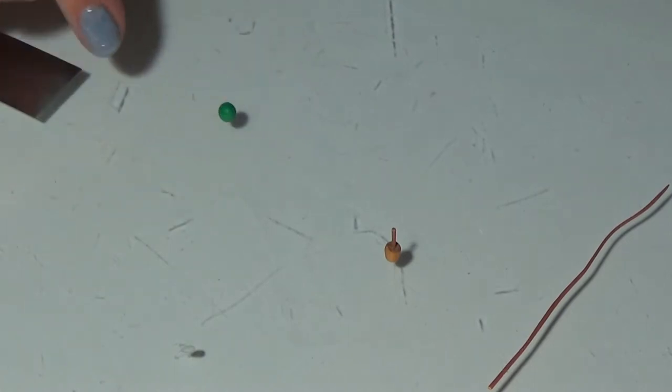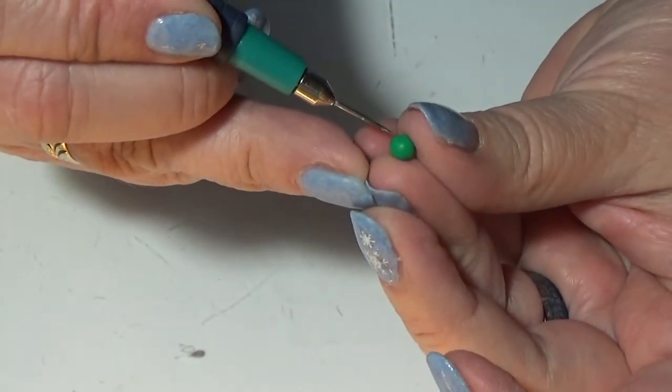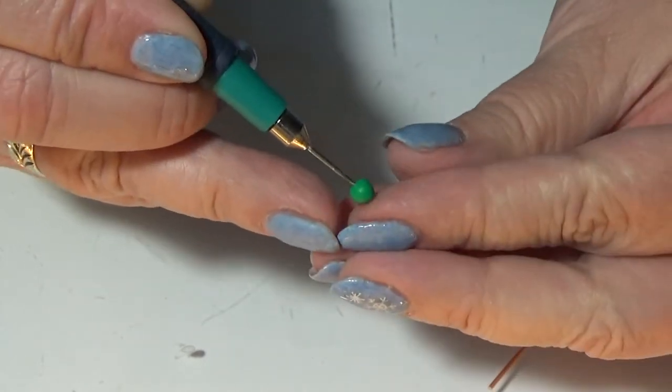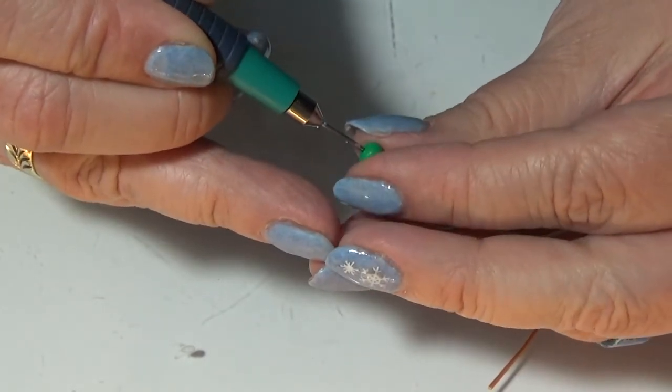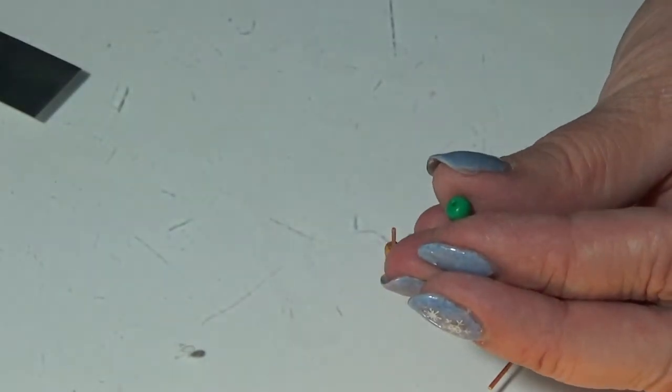I take a tiny piece of rest clay in a green color and I roll a ball of it. And again I poke a hole with my needle tool to make sure it's not going out of shape.